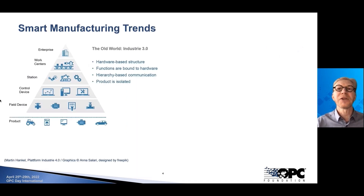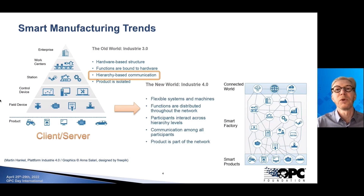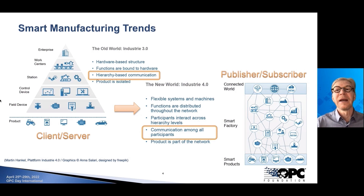If we look at the trends in smart manufacturing, we're still very much in the Industry 3.0 world, with hierarchical communication and the client-server model that we've been using. But we are moving towards the Industry 4.0 architecture where everything is connected to everything, and the publisher-subscriber model works much better for these purposes.